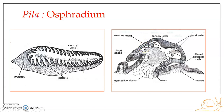The osphradium hangs like a curtain from the roof of the mantle cavity, directly in the path of the respiratory water current — the water which enters through the left nuchal lobe into the mantle cavity. In this position it functions as an olfactory organ or chemoreceptor, testing the chemical nature of the water entering the mantle cavity, also called the inspiratory water current.